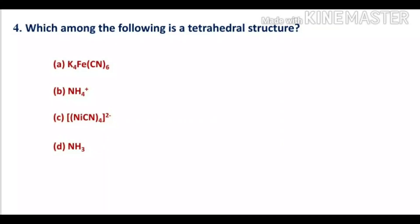Option A, K4Fe(CN)6, has six ligands surrounding the central metal ion and is D2SP3 hybridized, so it has an octahedral structure — not tetrahedral. Option B, NH4+, has four bond pairs and is assigned a tetrahedral structure, so option B may be the correct option.